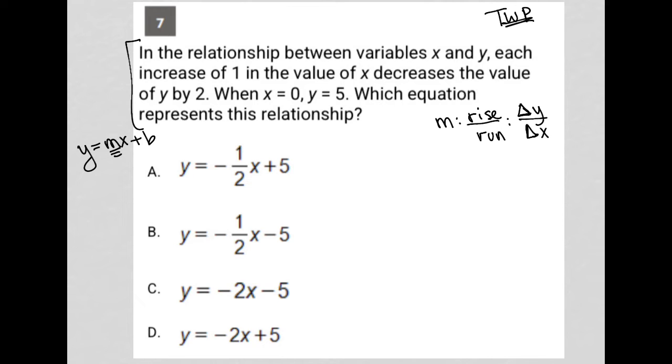So this first sentence is literally telling me that for every change of one positive unit in the x direction, there's a change of negative 2 or decrease of 2 units in the y direction. I translate that first sentence to mean that my slope is equal to negative 2.